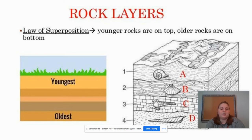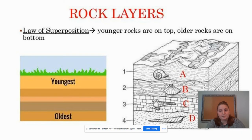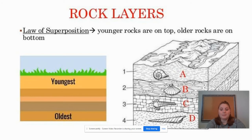And the oldest rocks — the rocks that were formed first — are going to be on the bottom. We also use the law of superposition to figure out where we might be able to find fossils. If I want to find a really old fossil, I should dig down quite a few layers. If I want to find a young fossil, I should not dig that far.